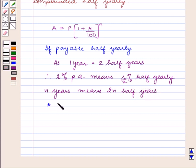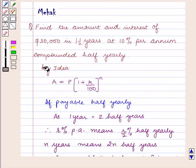Compound interest equals amount minus principal. So with this key idea, let us proceed with the solution.